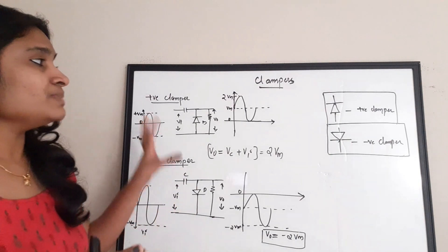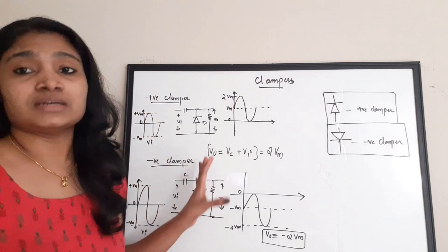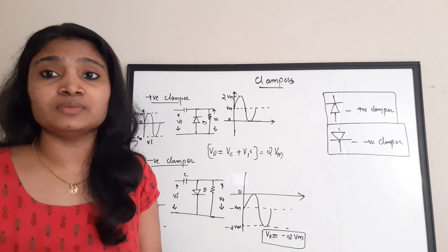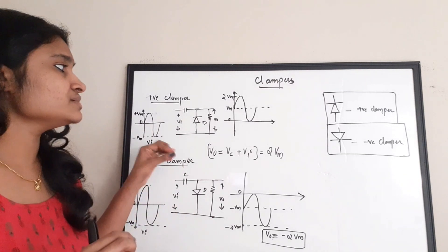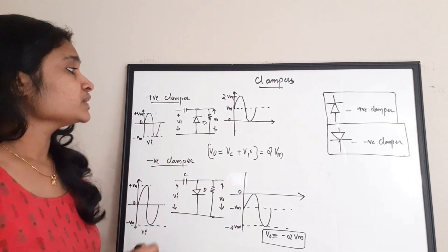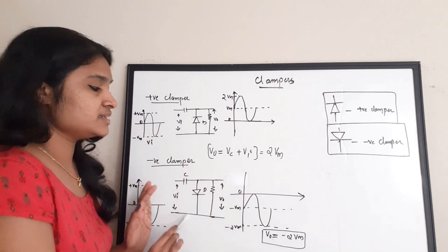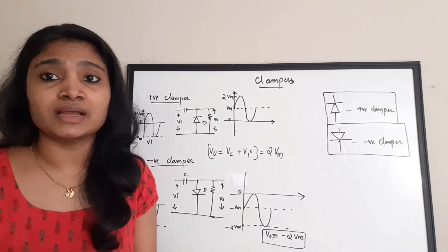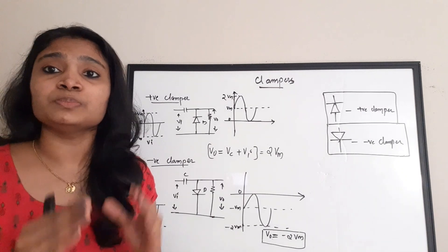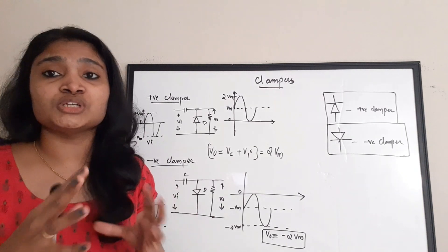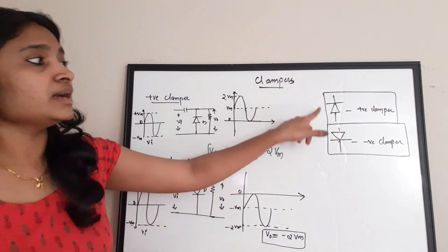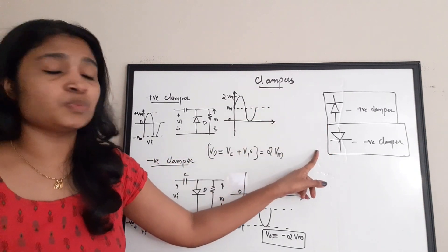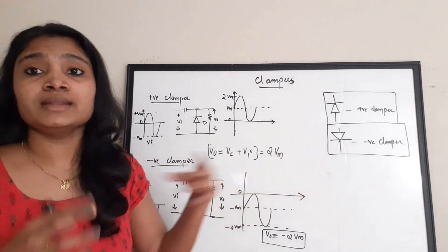The two basic types of clampers are the positive clamper and the negative clamper. We'll discuss this from an exam point of view. To identify whether a given clamper is positive or negative, you look at the position or direction of the diode. If the diode is pointed upwards, it is a positive clamper. If the diode is pointed downwards, it is a negative clamper.